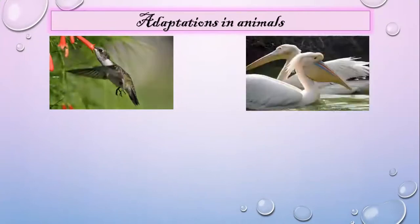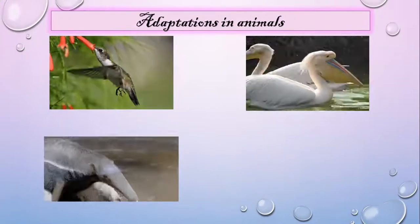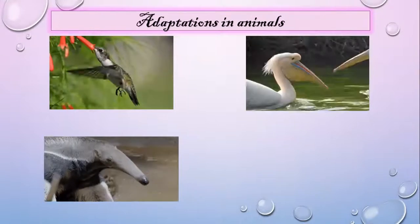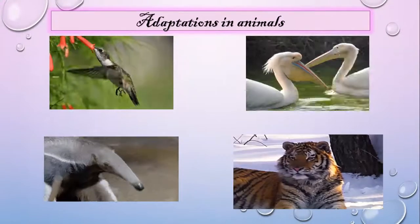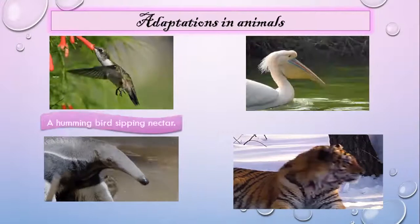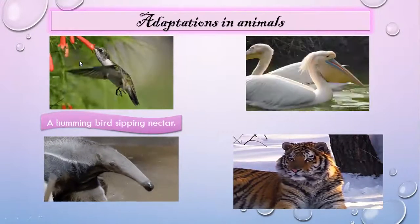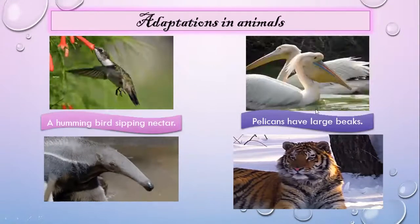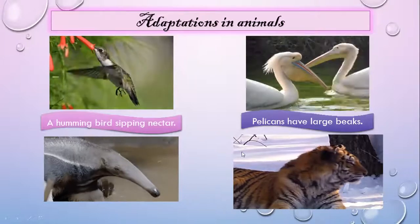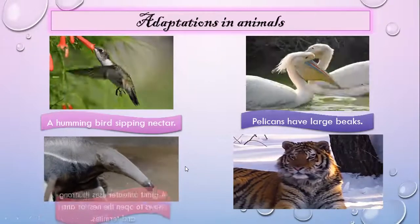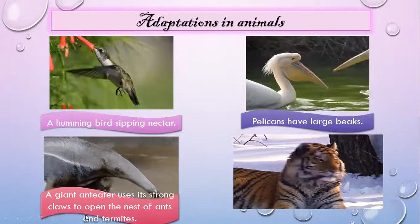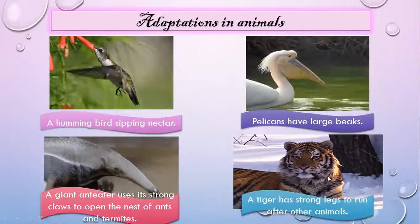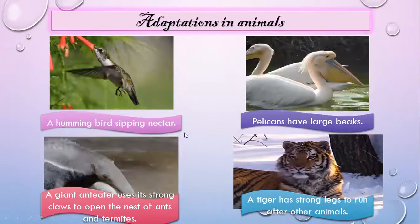Adaptations in animals: all living things grow and change. When an animal or plant changes to fit its surroundings, we say it has adapted to its surroundings. For example, a hummingbird sips nectar using its beak. A pelican has a pouch with a large beak to store fish. A giant anteater uses strong claws to open nests of ants and termites, while a tiger has strong legs to run after other animals.